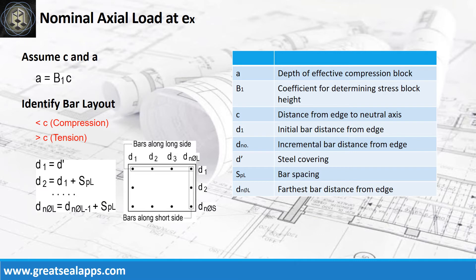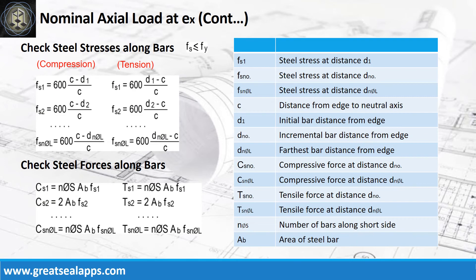Let the value of neutral axis c correspond to the given eccentricity at the x-axis. Identify bar layouts with their distances from the edge of the column section and their force type relative to their position from the neutral axis. At the x-axis, get the stress of each bar layout relative to the distance from the neutral axis and get their forces with their corresponding force type.